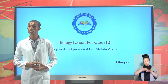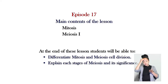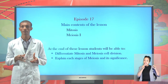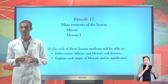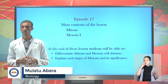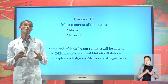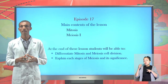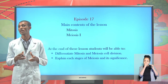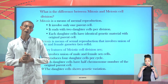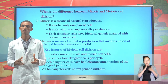Welcome to today's lesson. This is a biology lesson for Grade 12 students. In our last lesson, we were seeing Mendelian genetic cross and how to calculate genotype and phenotype for monohybrid and dihybrid cross. In today's lesson, we will see mitosis and meiosis one. At the end of this lesson, you will be able to differentiate mitosis from meiosis cell division, explain each stage of meiosis and its significance. What do you think is the difference between mitosis and meiosis cell division?